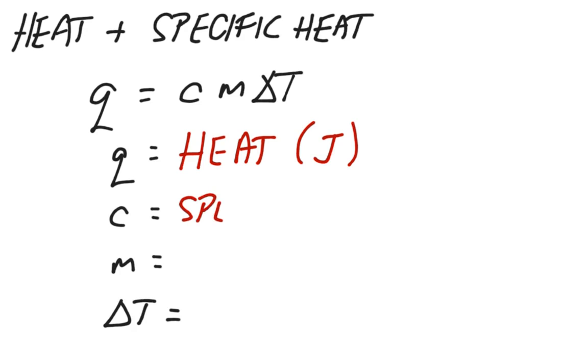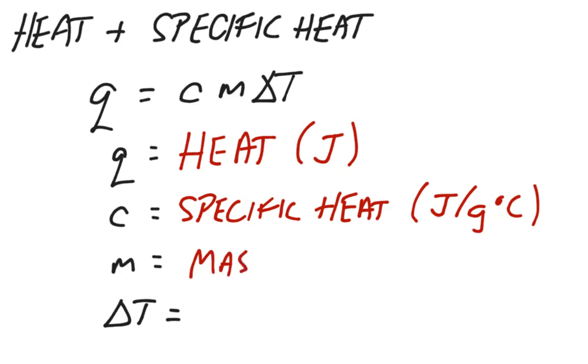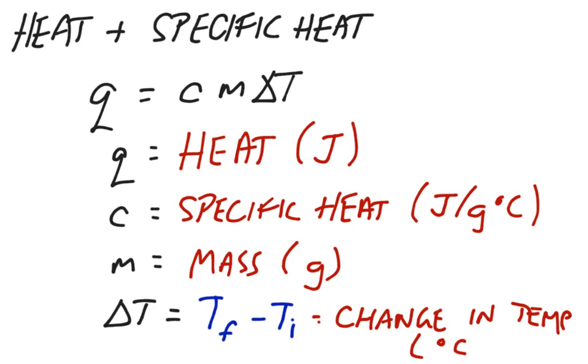C is our specific heat capacity, a constant value dependent on our material in joules per gram degree Celsius. M is mass in grams. Delta T can be tricky, especially when solving for one of the parts. Delta T is T final minus T initial, the change in temperature in units of degrees Celsius.